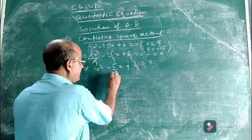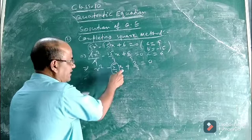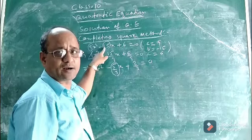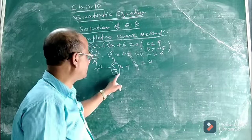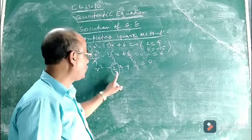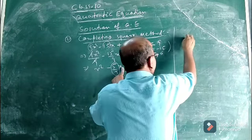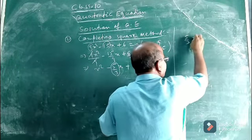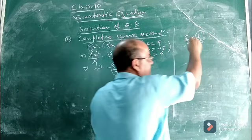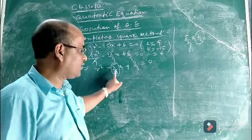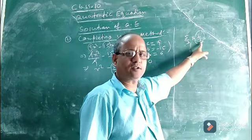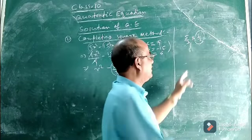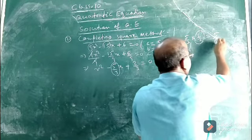The first step is over. The next step: after dividing by 9, the coefficient of x is now minus 5/3. Whatever the coefficient of x is at this step, you multiply it by 1/2. This is a fixed rule — multiply the coefficient of x by half. So multiplying minus 5/3 by 1/2 gives us 5/6.